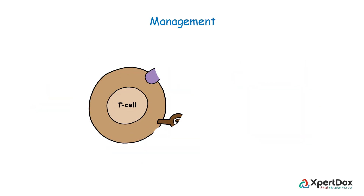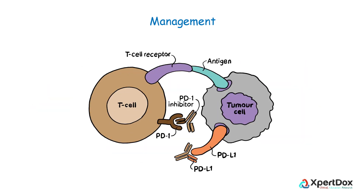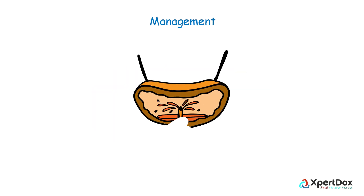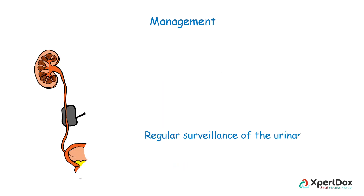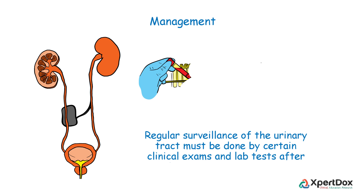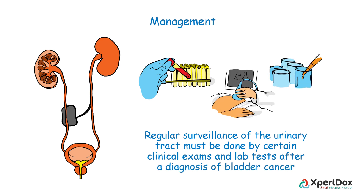PD-1 inhibitors are a type of immunotherapy used in the treatment of bladder cancer. Early-stage bladder cancer may also be treated with an intravesical immunotherapy called BCG. Regular surveillance of the urinary tract must be done by certain clinical exams and lab tests after a diagnosis of bladder cancer.